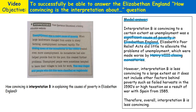In the first paragraph we've written about reasons why interpretation B is convincing. However, we also have to write about reasons it is less convincing. Interpretation B is less convincing to a large extent, as it does not include other factors behind poverty, like failed harvests in the 1590s or high taxation as a result of war with Spain from 1585. This shows more good own contextual knowledge to back up why interpretation B is not particularly convincing. We've then given a judgment at the end: overall, interpretation B is less convincing. You might want to elaborate in more detail on your justification, as we've run out of space here in the model answer.